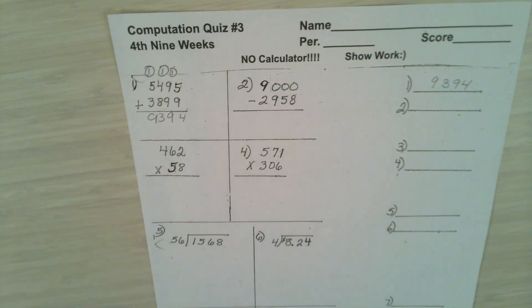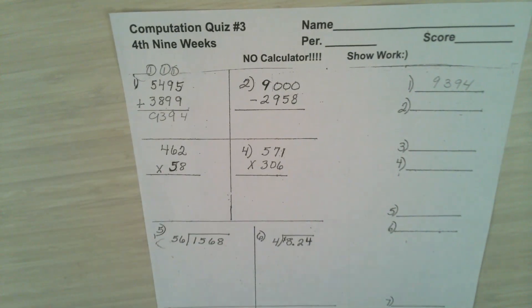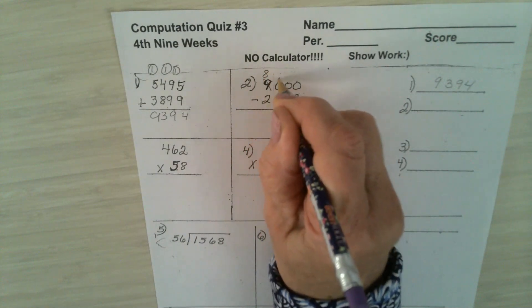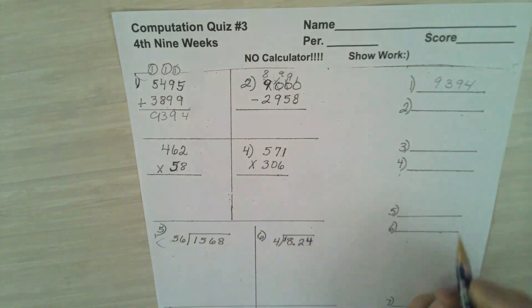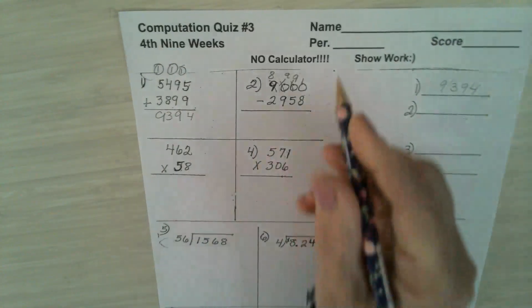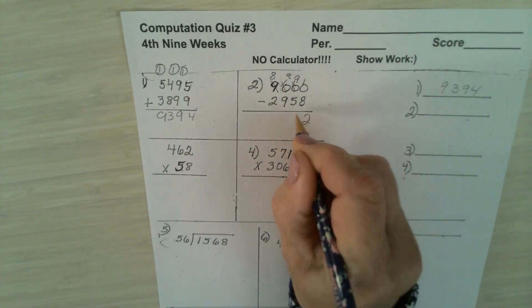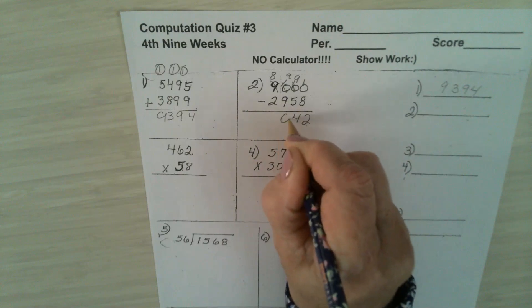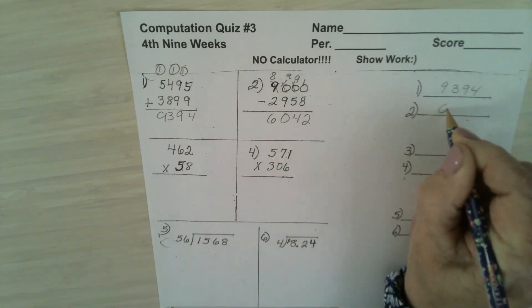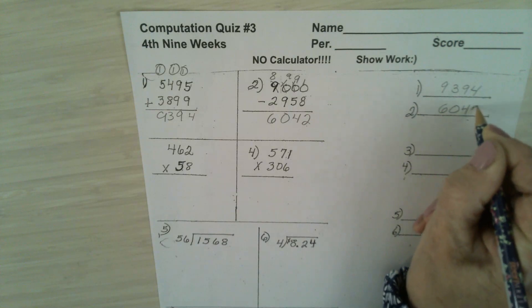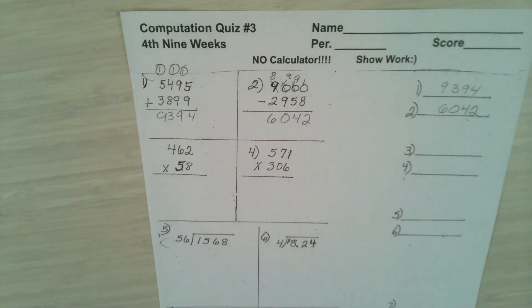In number two, you have to borrow from the 9. It turns into an 8. And then you finally can have that turn into a 10. 10 minus 8 is 2, 9 minus 5 is 4, 9 minus 9 is 0, 8 minus 2 is 6. You need to have 6042 on your answer blank.